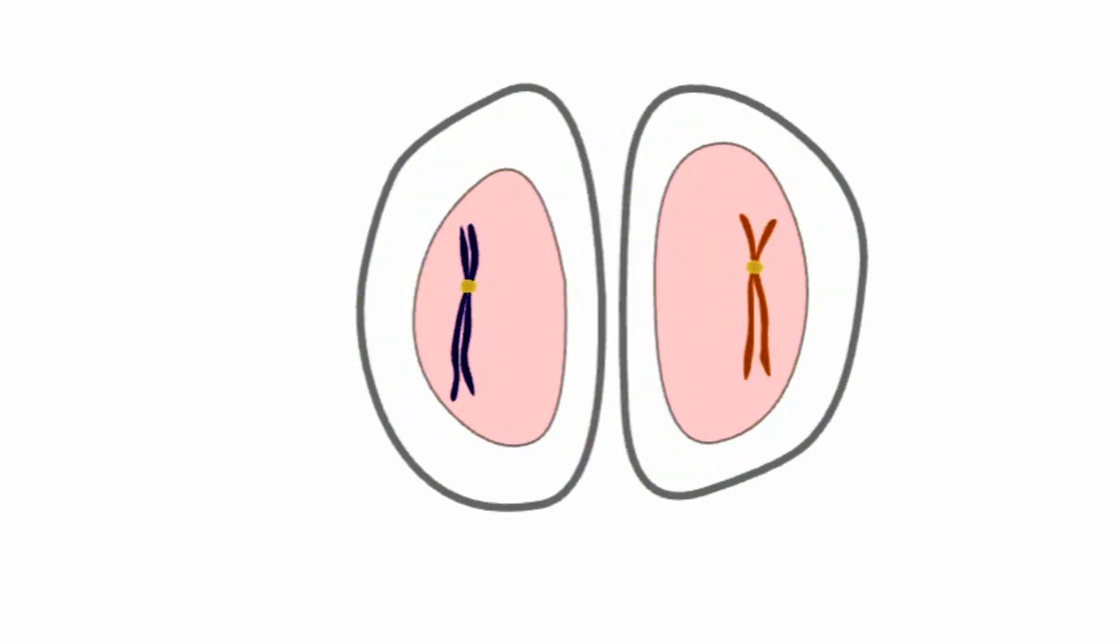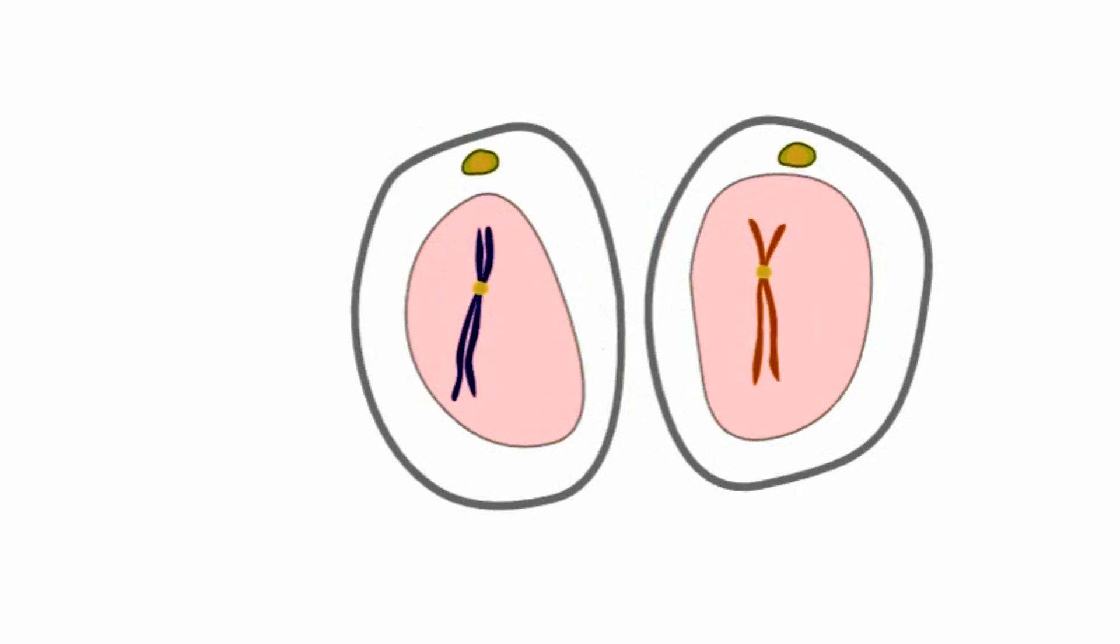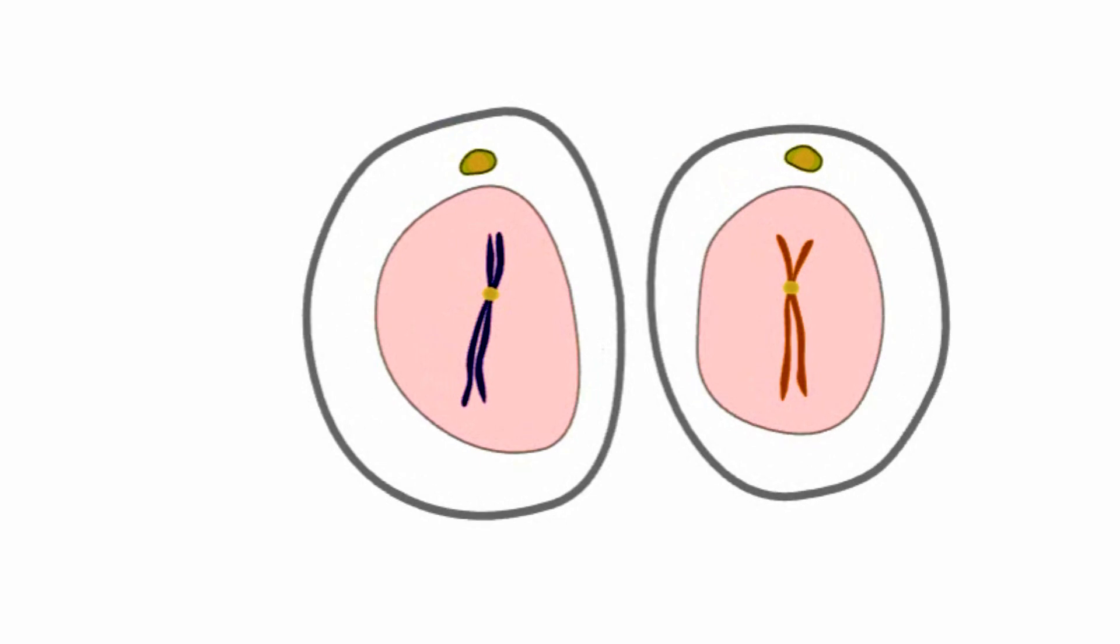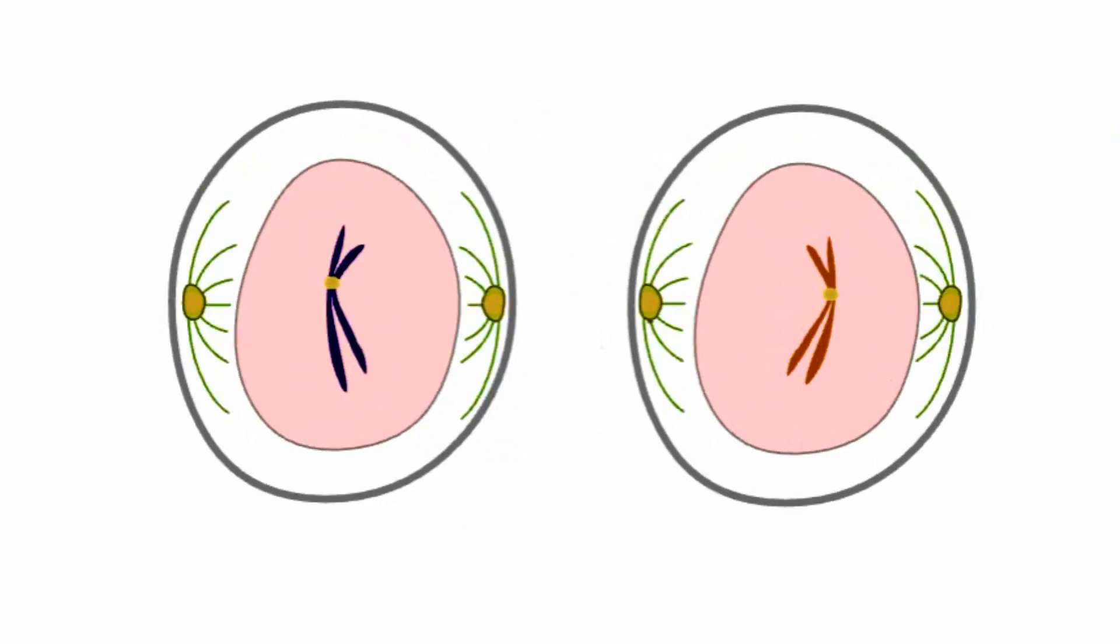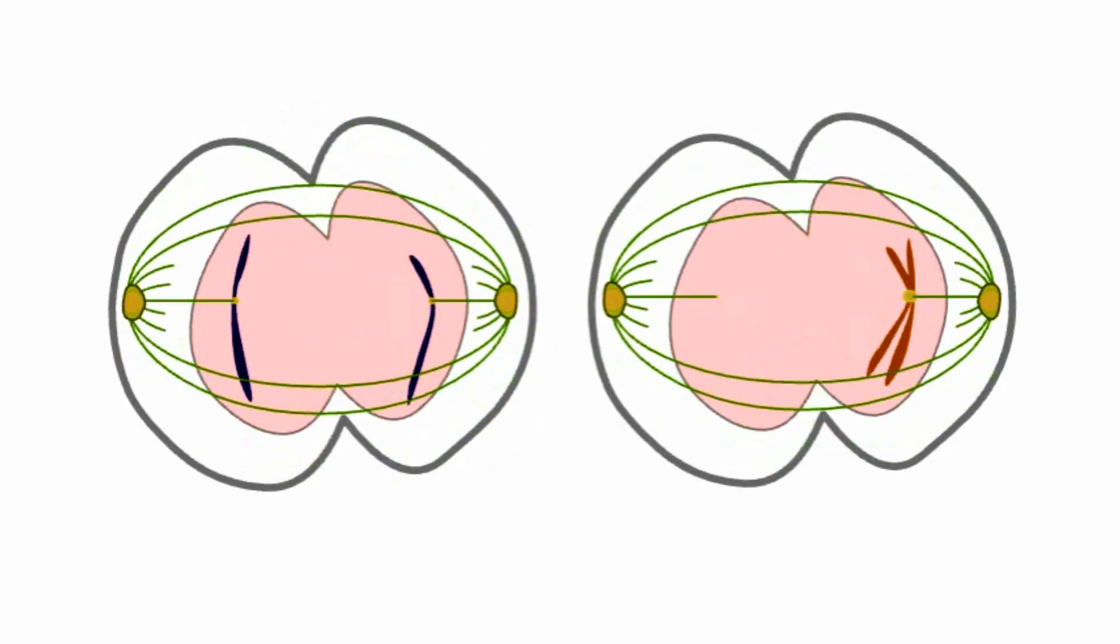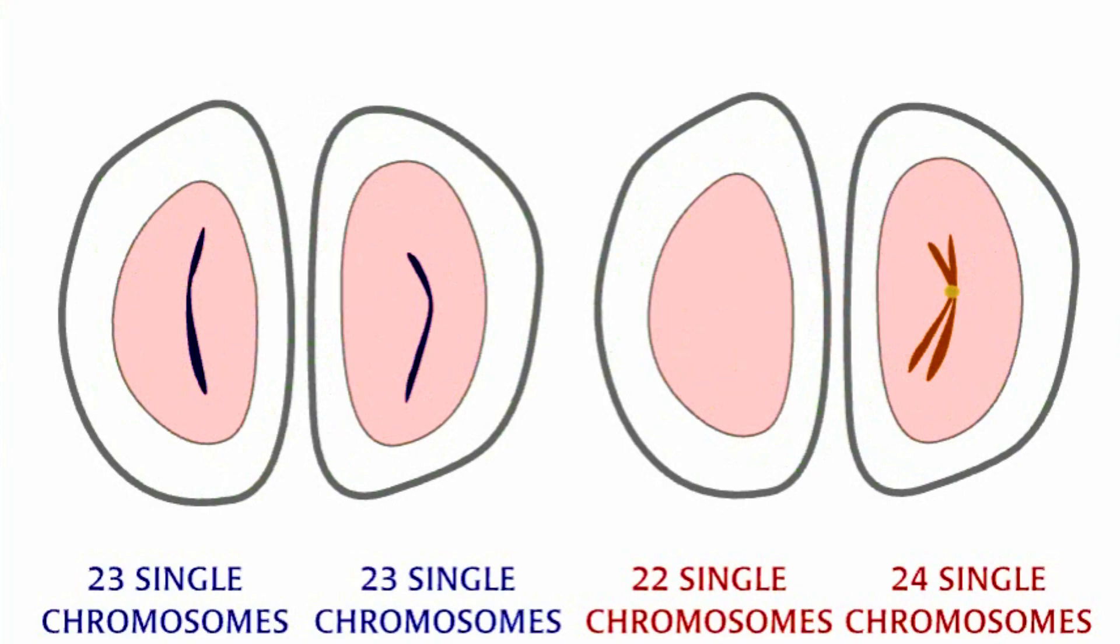One pair of chromosomes fail to separate and both chromosomes go to one side of the dividing cell. This cell division mistake is called non-disjunction.